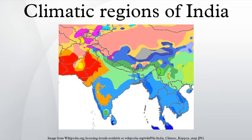Tropical wet climate group: the regions belonging to this group experience persistent high temperatures which normally do not go below 18 degrees Celsius even in the coolest month. The west coastal lowlands, the Western Ghats, and southern parts of Assam have this climate type. It is characterized by high temperatures throughout the year, even in the hills.